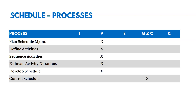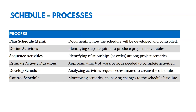There are six processes: five are in planning, and one is in monitoring and controlling. With Plan Schedule Management, we're documenting how the schedule will be developed and controlled — what estimation techniques we'll use and so on. Then we Define Activities, identifying steps required to produce deliverables, going from work packages down to activities. Then we Sequence Activities, estimate durations, develop the schedule, and then control it over time.